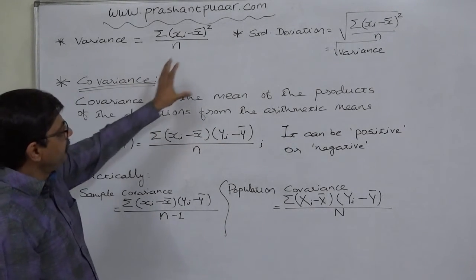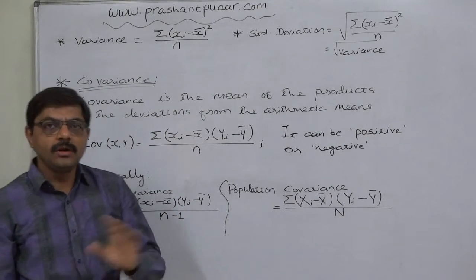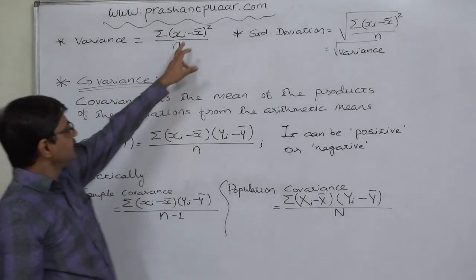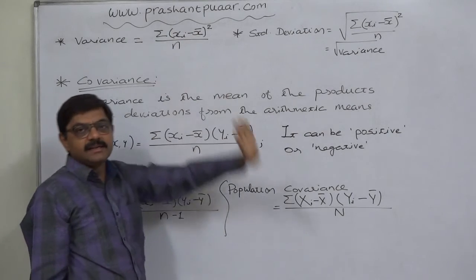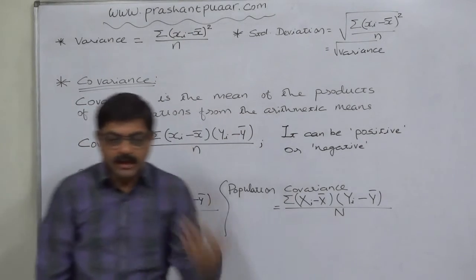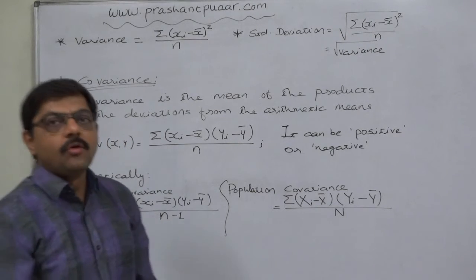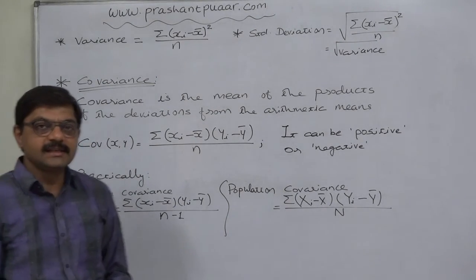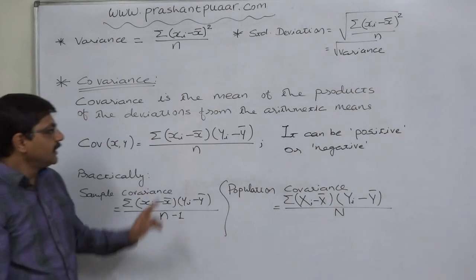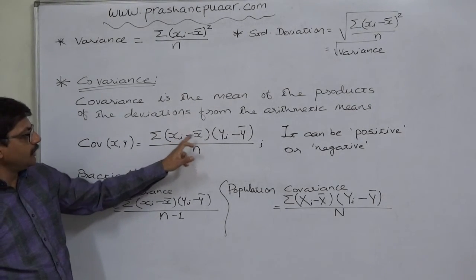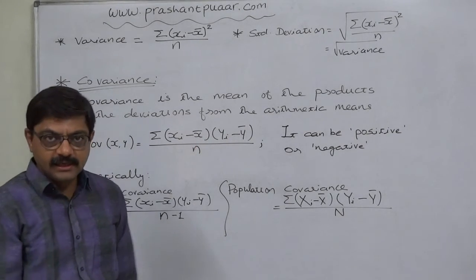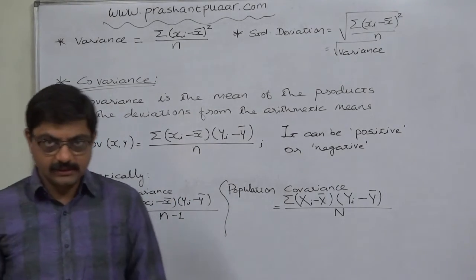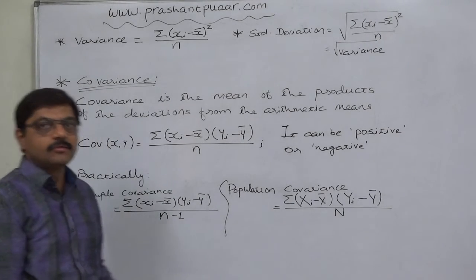In case of variance and standard deviation, we take only one variable into consideration at a time, because we are interested in studying the distance between the actual data value and its arithmetic mean. But now if we believe two variables to be correlated, Carl Pearson suggested the concept of covariance. He suggested that we should study the differences between actual data value and arithmetic mean simultaneously, if we want to study the relationship or correlation between the two variables. And he developed mathematically the concept of covariance.